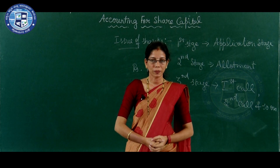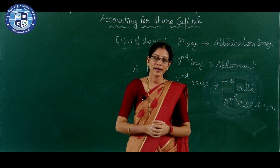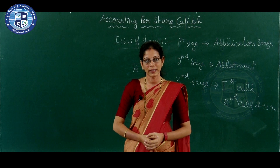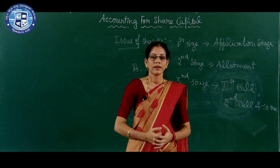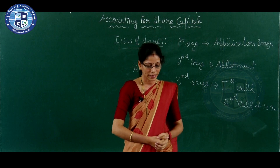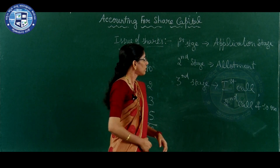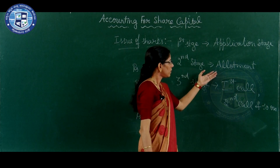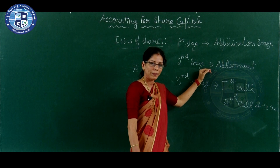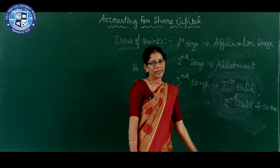After the allotment of shares, the company issues a letter of allotment to the applicants. In that letter, the company mentions the number of shares allotted and the amount of money which the applicants have to pay. The amount payable by the applicants to the company at this stage is called as allotment money.